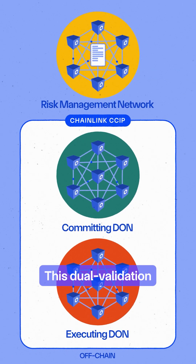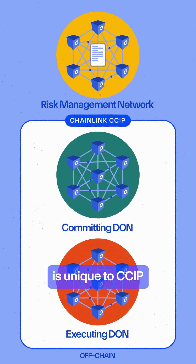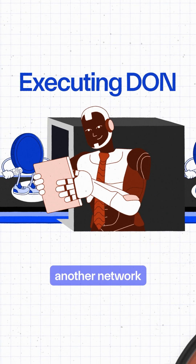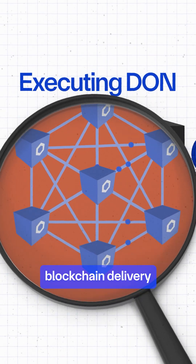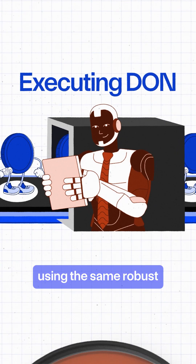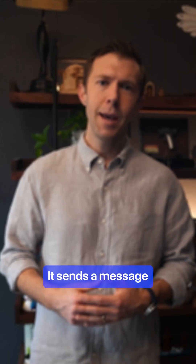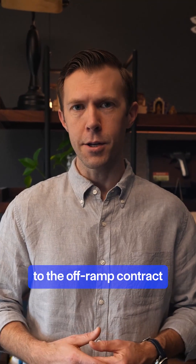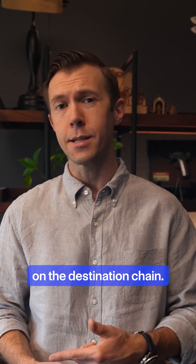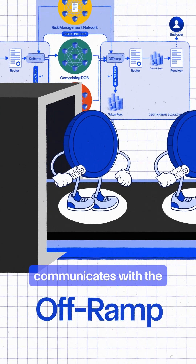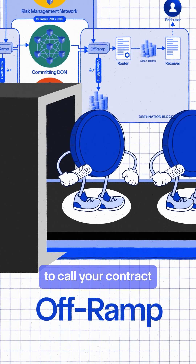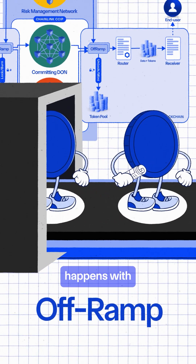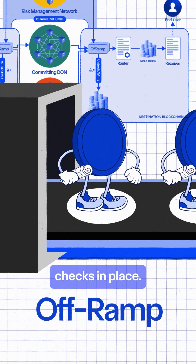This dual validation system is unique to CCIP and is crucial for security. Finally, there's the executing DON, another network of many nodes, which handles the destination blockchain delivery using the same robust consensus mechanisms. It sends a message to the off-ramp contract to complete the transaction on the destination chain. The off-ramp communicates with the router contract on the destination chain to call your contract or EOA. All of this happens with rate limits and security checks in place.